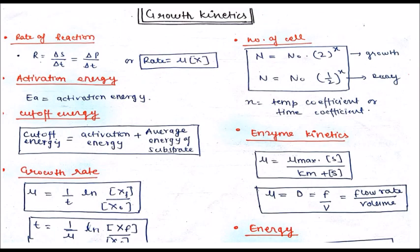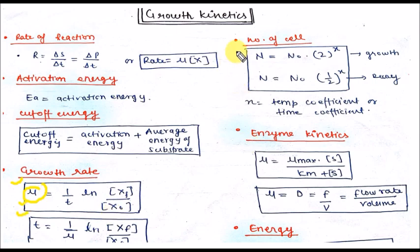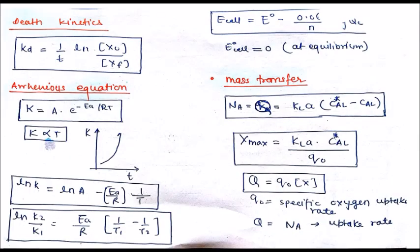Let's come to growth kinetics. The very important formula of growth rate — mu is the specific growth rate constant — can be calculated as: mu equal to (1/t) times ln(Xf/X₀), where Xf is the final biomass concentration and X₀ is the initial biomass concentration. You can calculate the number of cells after certain divisions or decay with this formula.